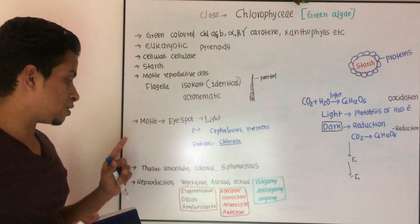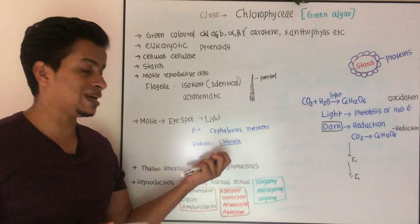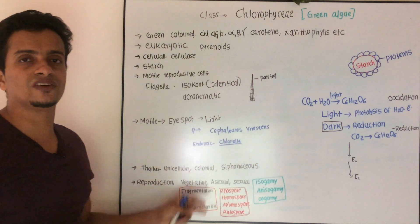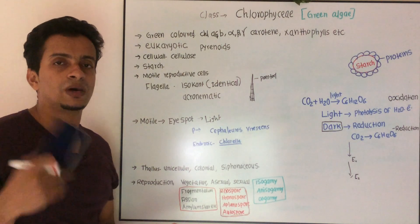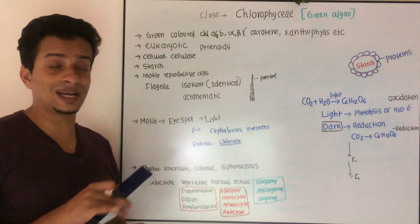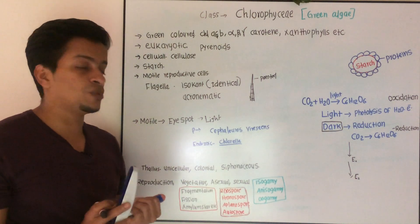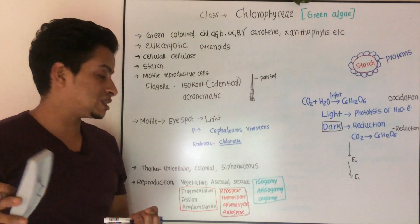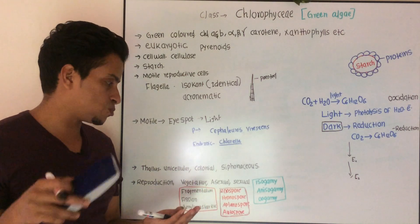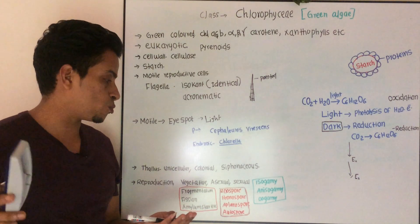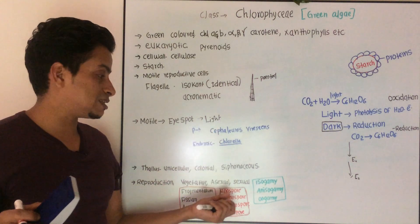Coming to reproduction, you can see three modes: vegetative, asexual, and sexual. Vegetative reproduction includes fragmentation, fission, bulbil, secondary protonema, etc. Asexual reproduction includes zoospores (motile), hypnospores (non-motile), thick-walled resistant spores, aplanospores (also non-motile), and autospores — identical spores produced by the thallus itself.